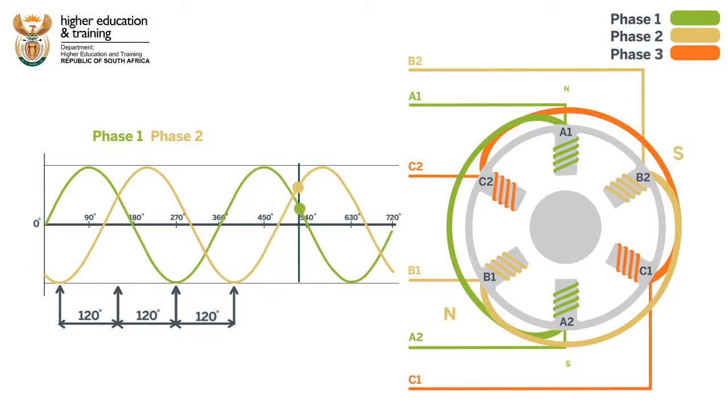Have a look at how the north pole on B1 forms just after the north pole forms on A1 and how this corresponds to the graphs.